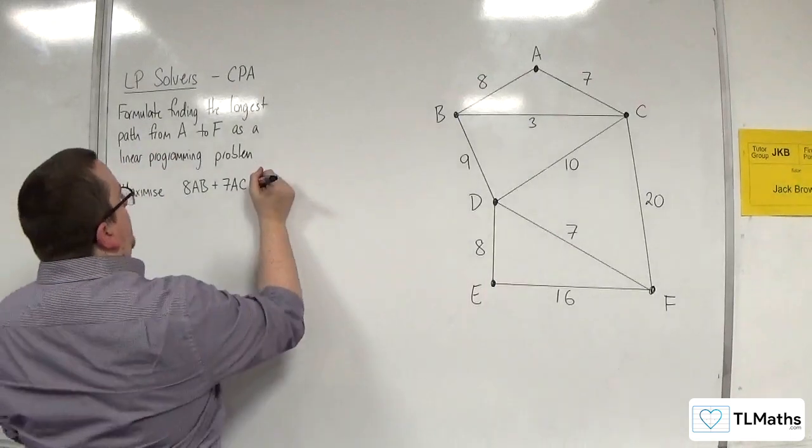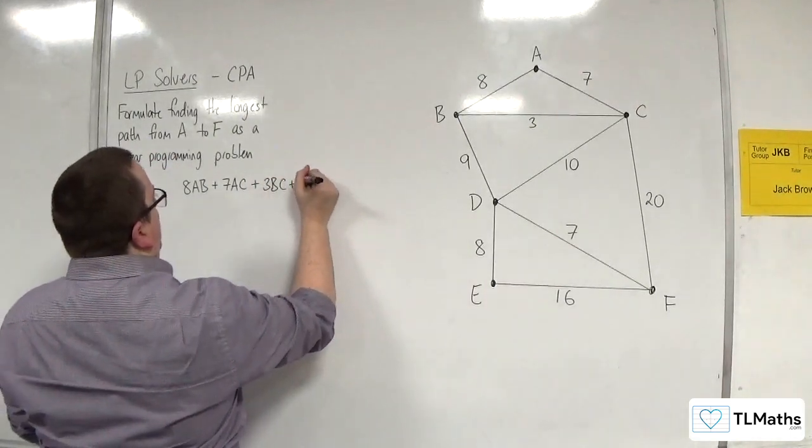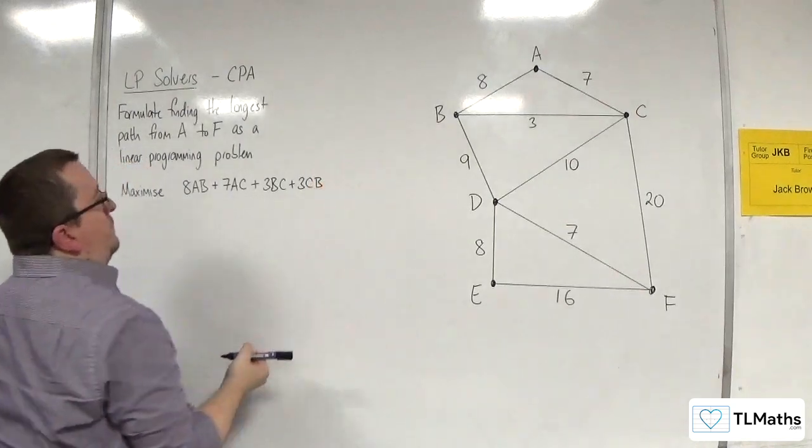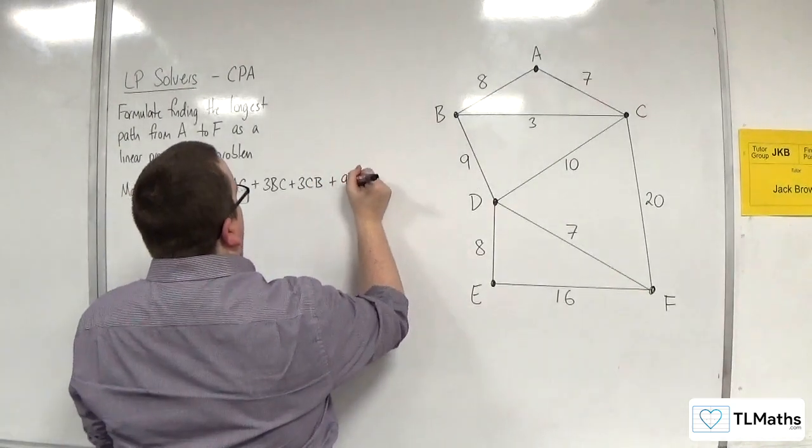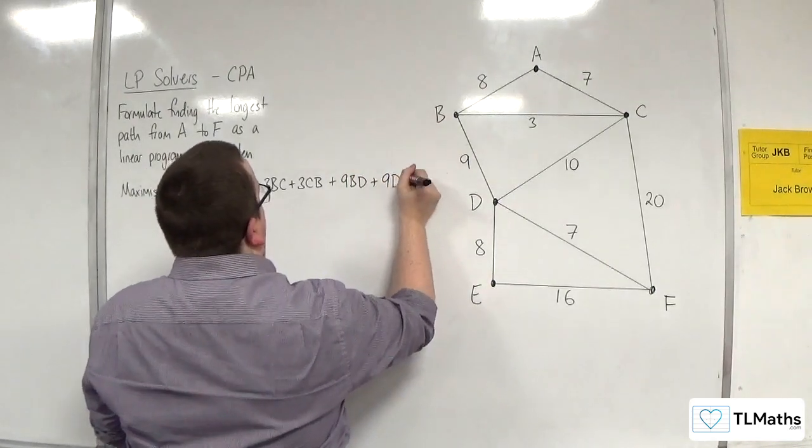We've got 3 lots of BC or 3 lots of CB. We've got 9 lots of BD or 9 lots of DB.